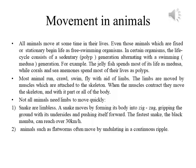Most animals run, crawl, swim, or fly with the aid of limbs. The limbs are moved by muscles which are attached to the skeleton. When the muscles contract, they move the skeleton and with it part or all of the body. Not all animals need limbs to move quickly — for example, snakes are limbless. A snake moves by forming its body into a zig-zag, gripping the ground with its underside and pushing itself forward. The fastest snake, the black mamba, can reach over 30 km per hour. Animals such as flatworms often move by undulating in a continuous ripple.